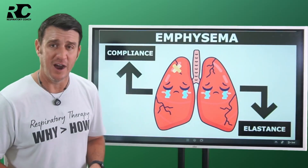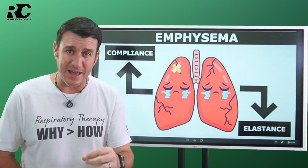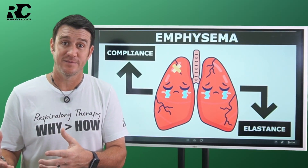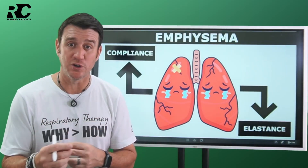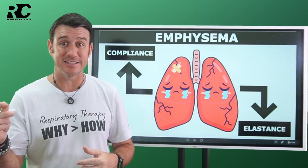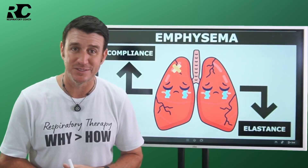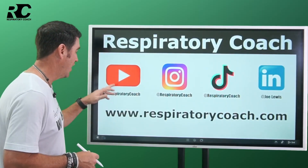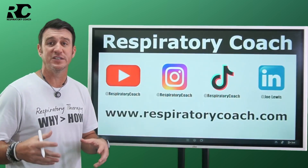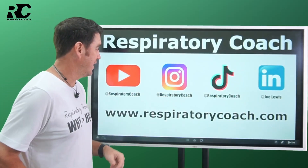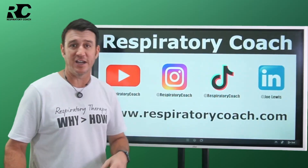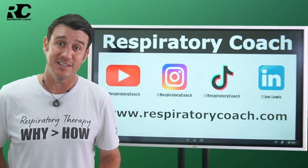That's compliance and elastance. Quick summary: Compliance — how easily the lungs inflate. Elastance — how quickly they recoil during expiration. Keep it in mind like this: compliance relates to inspiration; elastance relates to expiration. Hopefully that helps. I'm the Respiratory Coach — hit subscribe, like, and leave a comment telling me how often you talk about elasticity at the bedside. Find me on Instagram, TikTok, and LinkedIn at respiratorycoach. Don't forget about the TMC and CSC boot camps, and above all else, remember: average is easy — don't be it.